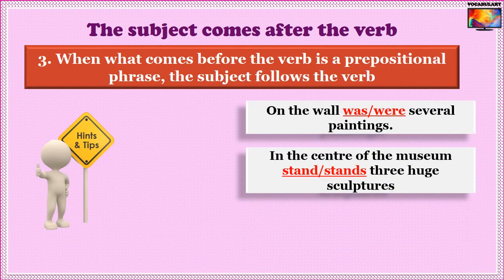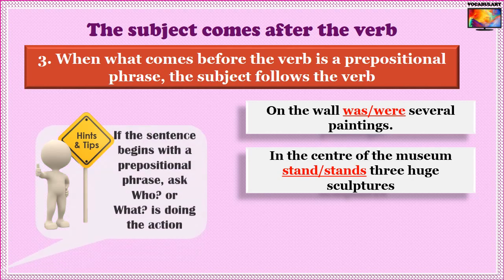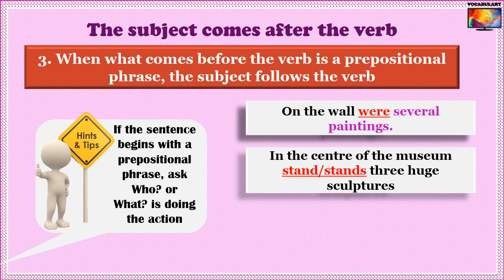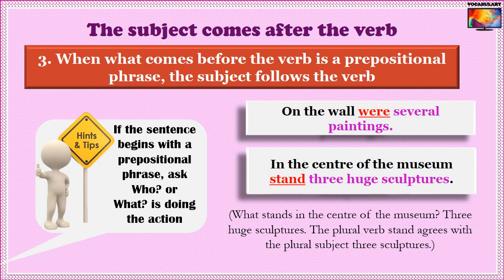The third case of subject after verb is when a prepositional phrase comes before the verb and the subject follows. Turning the sentence around works here as well — prepositional phrases can't be subjects. 'On the wall were several paintings' — 'On the wall' is a prepositional phrase; rephrase to 'Several paintings were on the wall,' so 'were.' 'In the center of the museum stand three huge sculptures' — plural subject 'three huge sculptures,' so the plural verb 'stand' agrees.